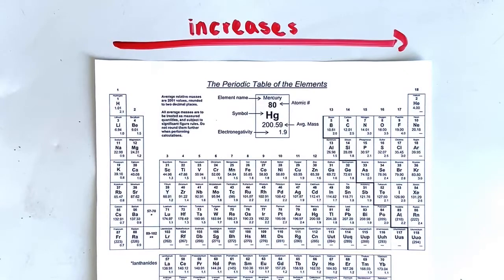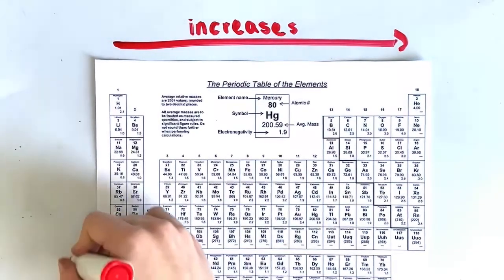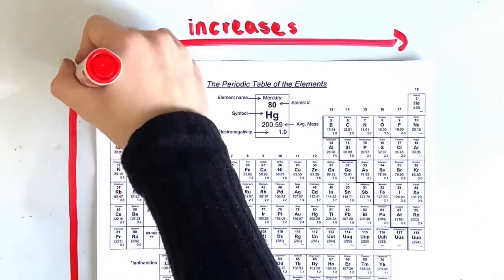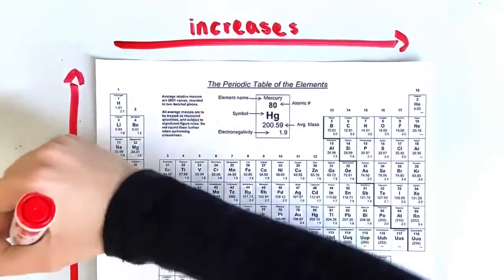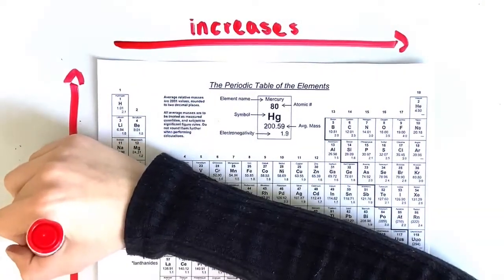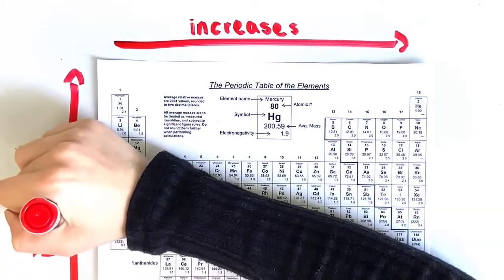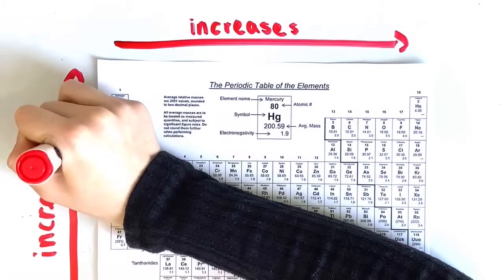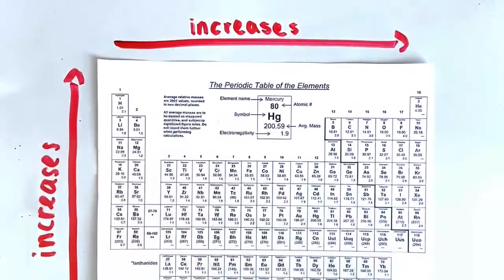Electronegativity also increases going up the periodic table. This is because going up the periodic table, the distance between the electrons and the nucleus decreases, creating stronger attraction between the nucleus and electrons. The greater the attraction, the greater the electronegativity value.